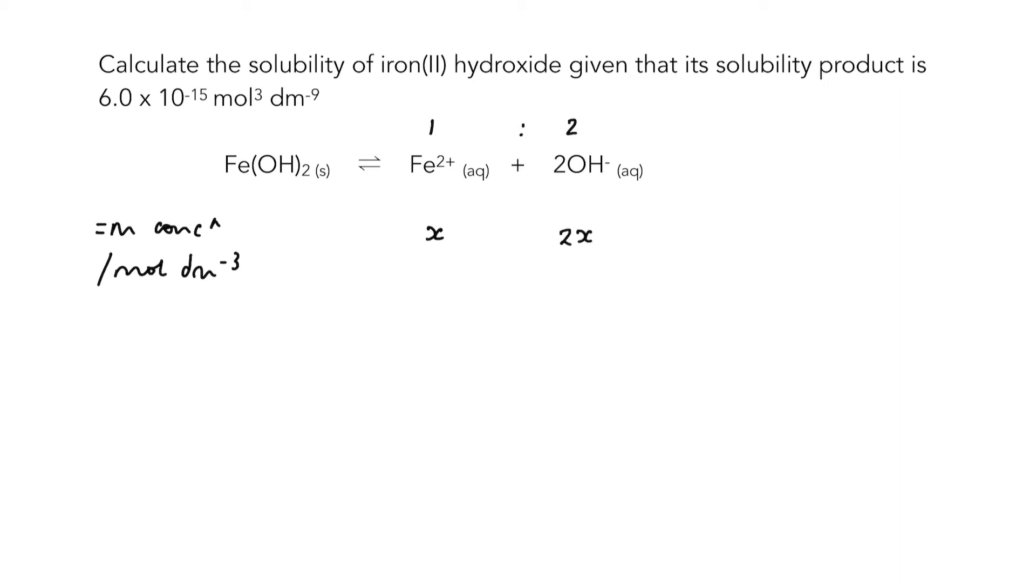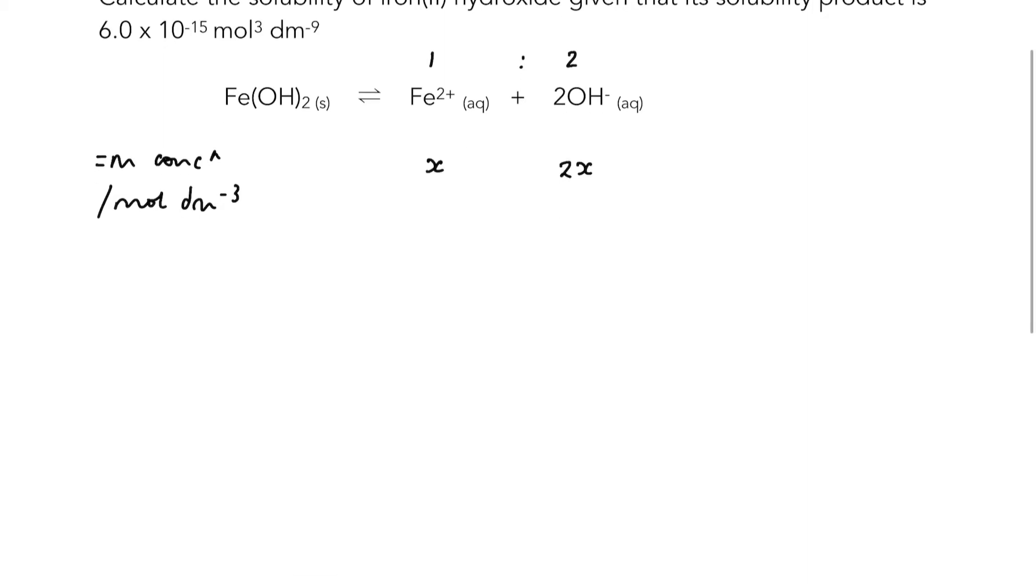Writing the solubility product expression for this: it's [Fe2+] in square brackets for concentration, times [OH-] squared, raising it to the power of two because we've got two moles of hydroxide ions in my stoichiometric equation.